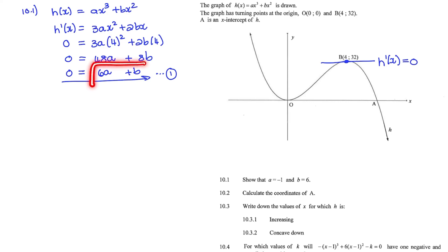For the second equation of A and B, I won't use the derivative again, but I'll use these x and y values and substitute it into the equation given. So we have H(x) equals Ax cubed plus Bx squared, where the y value, which is represented by H(x), is equal to 32.